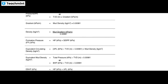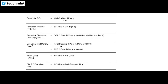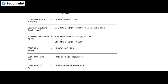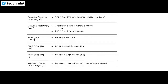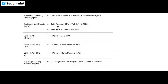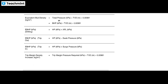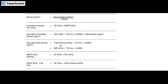EBHP equals HP plus APL; EBHP equals HP minus swab pressure; EBHP equals HP plus surge pressure. Trip margin density increase equals trip margin pressure required divided by true vertical depth divided by 0.0981. These are the formulas list utilized in well control.